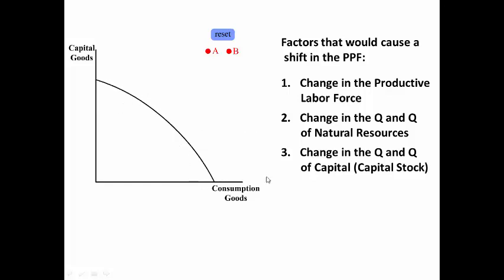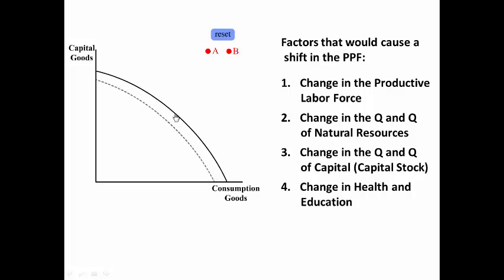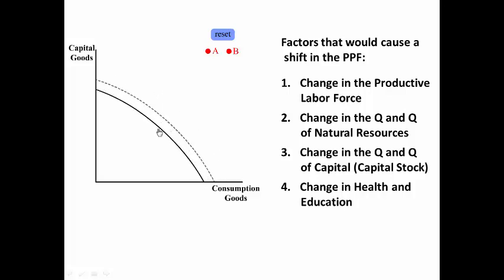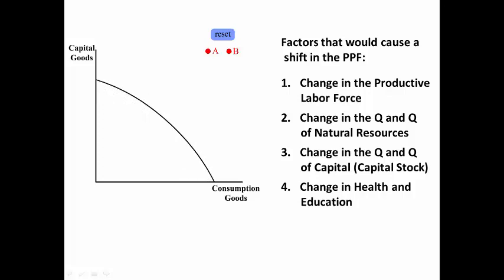Number four, if there's a change in health and education. If health and education get better, this is going to shift the production possibilities frontier outward. Number five, if there's a change in technology in the long run.